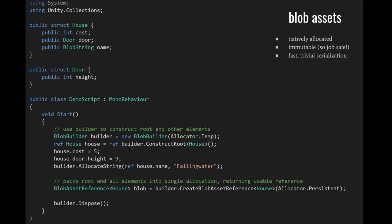When we construct the root, we get a reference to the house — we want a ref rather than just a value because a non-ref local variable would just be its own copy. We want to modify the house actually stored in the blob. When we assign to the cost and height, we're setting the values that will be stored in the blob. We call allocateString, pass in the value we want, and the reference to the blobString that's going to point via offset to where the actual string data is stored. The builder is just how we set up the data; we don't get the actual final blob until we call createBlobAssetReference, which creates the actual allocation and copies all the data from the builder into the blob. Once we have our blob, we dispose of the builder.